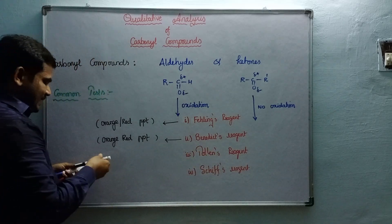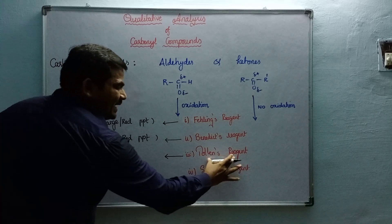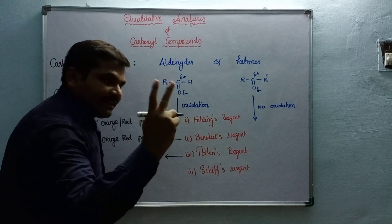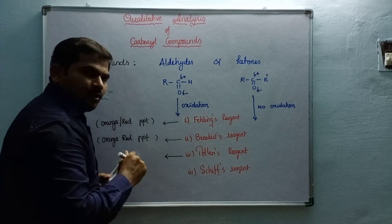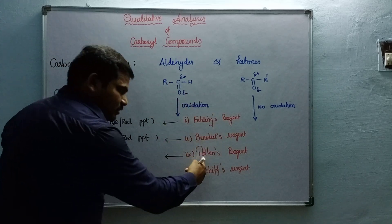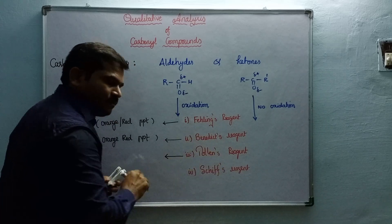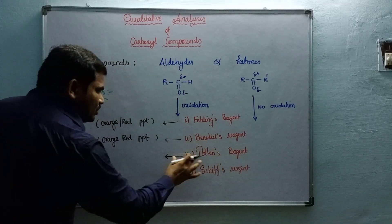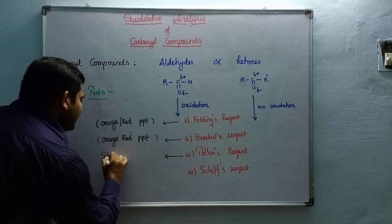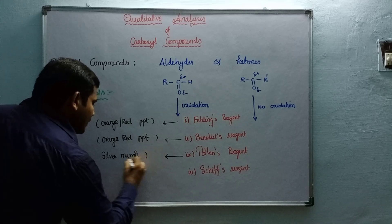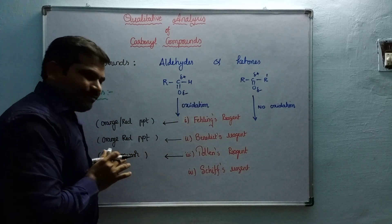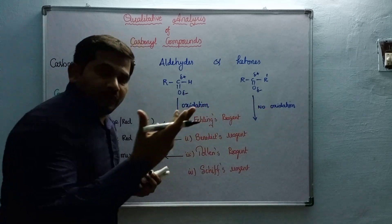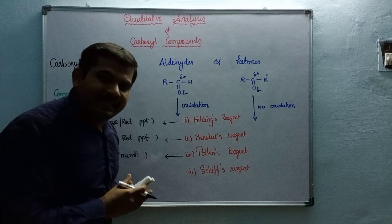Next is Tollens' reagent test. Combine Tollens' A and Tollens' B reagents, then add your sample. You will get a silver mirror on the inner walls of the test tube — that indicates your sample is an aldehyde. If you did not get any silver mirror, that indicates your sample is a ketone. Note that Fehling's, Benedict's, and Tollens' reagents each have two components (A and B) that must be combined before adding the sample.